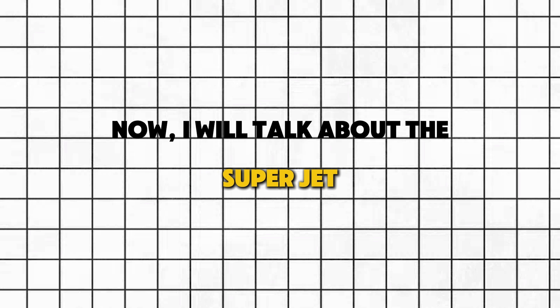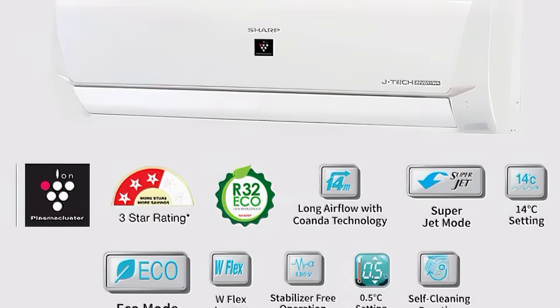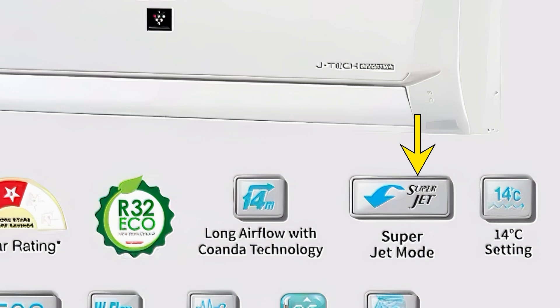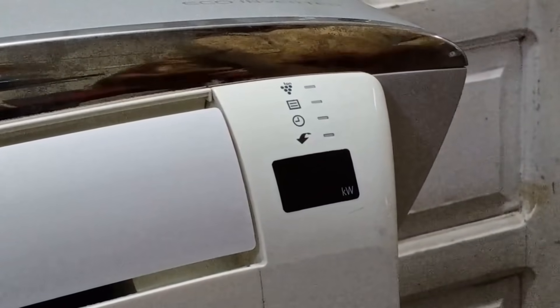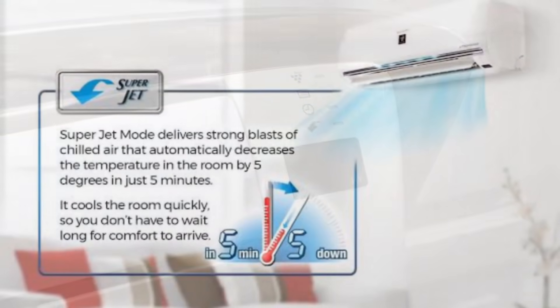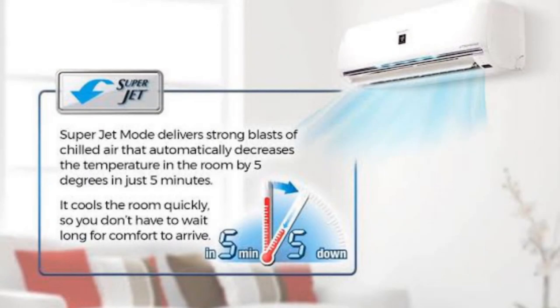Now I will talk about the Superjet function. When we turn this function on, it means that the unit has the capability to lower the room temperature by up to 5 degrees within 5 to 10 minutes.